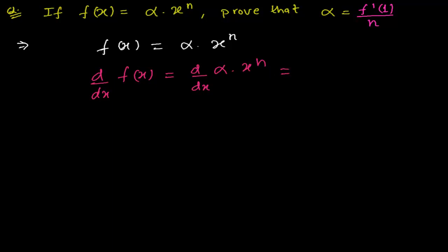As we have learned in the previous video, if we are going to find out the derivative of some constant times some function, then we can take out the constant outside and then simply it will be the derivative of the function. So here what I can do, I can simply take out this alpha as a constant outside and then d/dx of x to the power n.